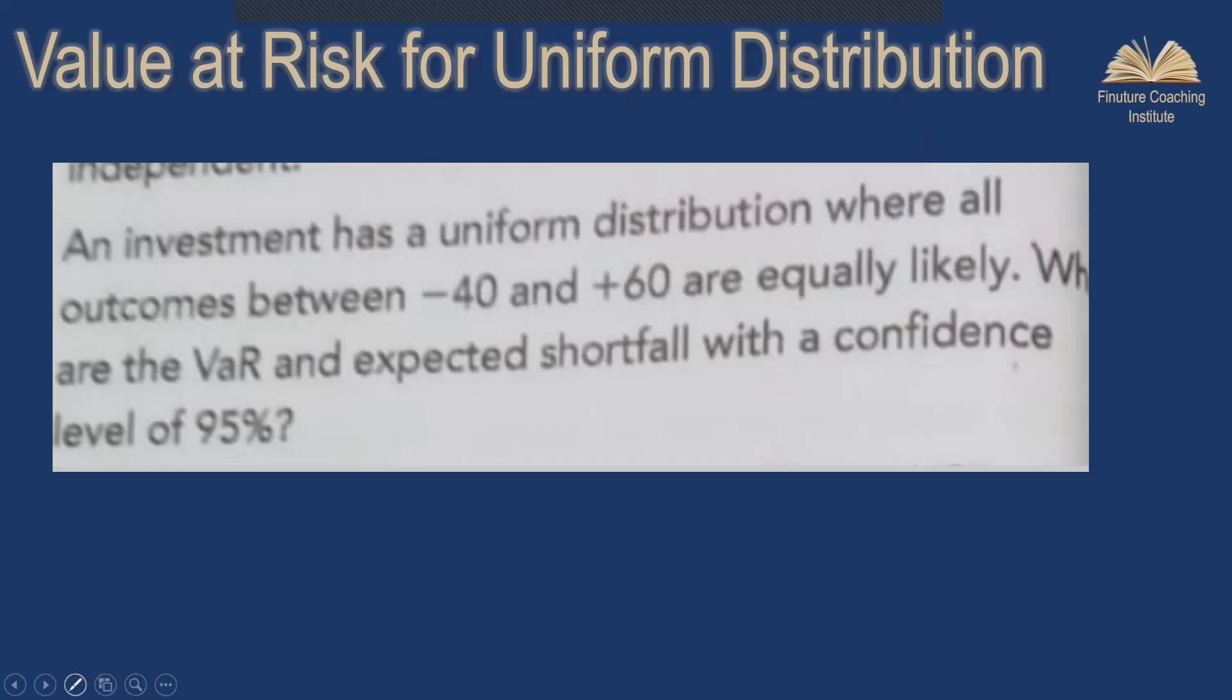We have an investment which has a uniform distribution where all the outcomes are between minus 40 to plus 60. As it suggests, it's uniformly distributed, so the likelihood of all outcomes would be equally distributed. My apologies because the screenshot sent did not have the complete question, but we have to calculate value at risk and expected shortfall with a confidence level of 95%.